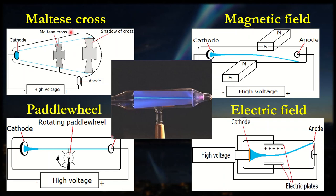The experiments we're going to look at is the Maltese cross, magnetic fields, paddle wheel, electric fields, and fluorescence. We're going to see how all these five different experiments come together to show the specific nature of cathode rays, aka electrons.